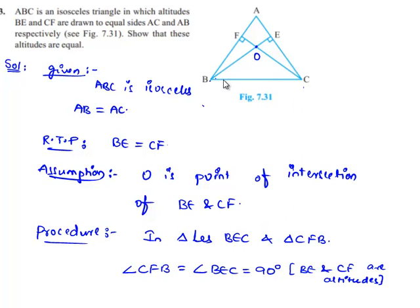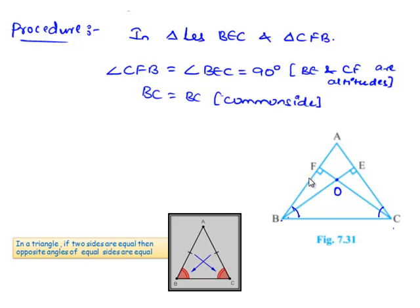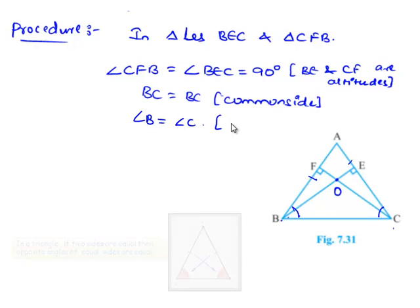And also, we can say in both the triangles BC is the common side. Also, angle B is equal to angle C, as in an isosceles triangle, angles corresponding to equal sides are equal. We can write angle B is equal to angle C as ABC is an isosceles triangle.